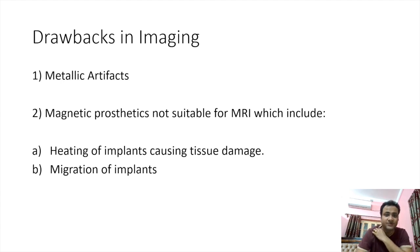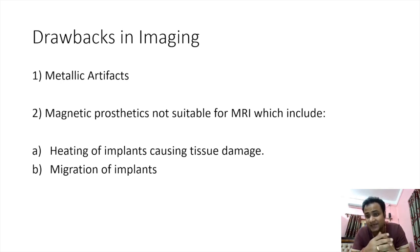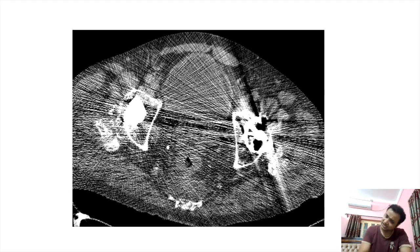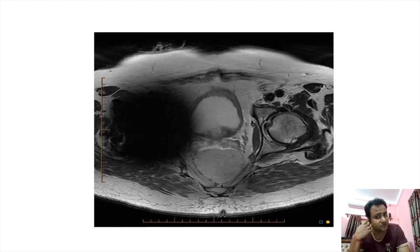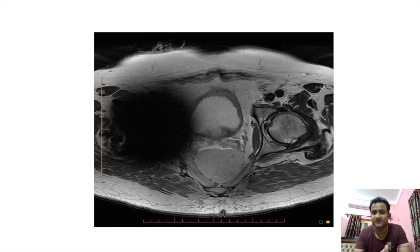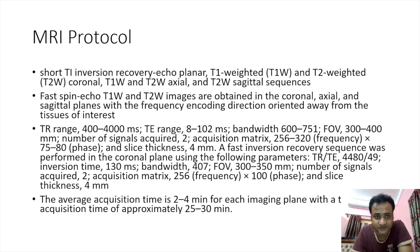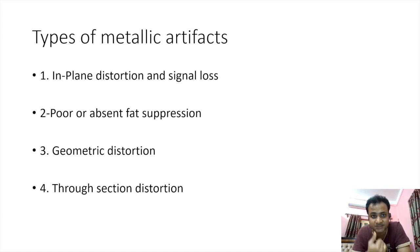Moving to drawbacks: there are issues when imaging metal prostheses. Metallic prostheses are not suitable for MRI as they can cause heating of the implants leading to tissue damage and migration. An example shows streak artifacts from bilateral hip prostheses where the image is very poor and nothing within the pelvis can be discerned. On MRI, hypointense metal artifact production makes the joint impossible to visualize. Types of metal artifacts include in-plane distortion, signal loss, poor or absent fat suppression, geometric distortion, and through-section distortion.